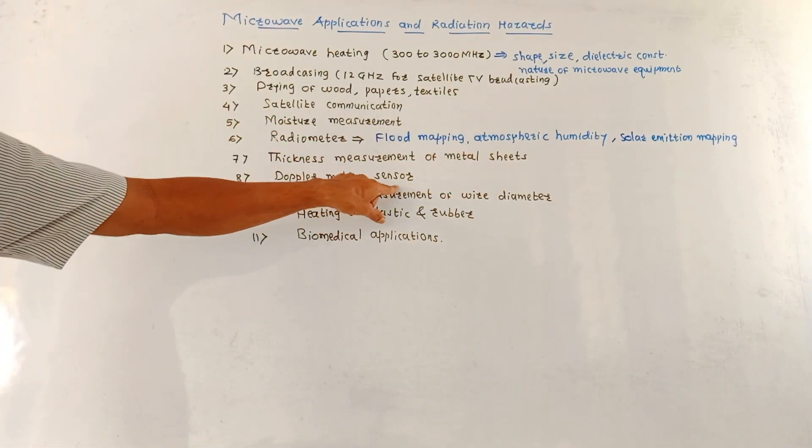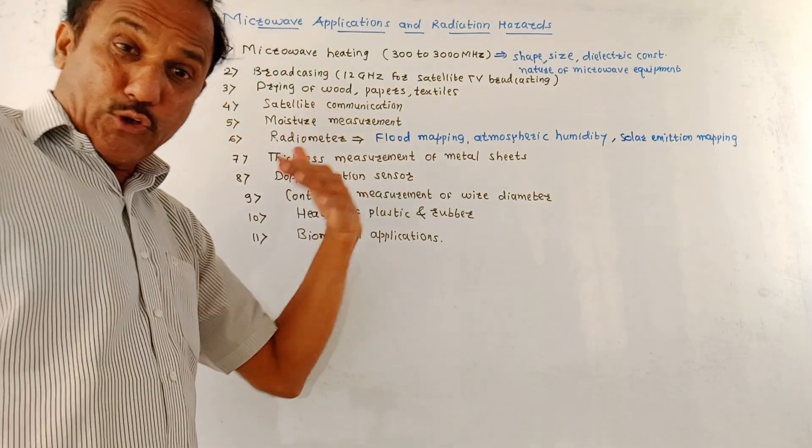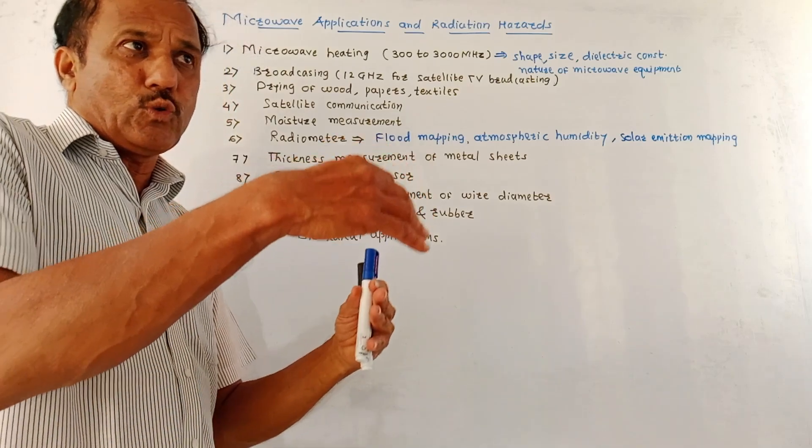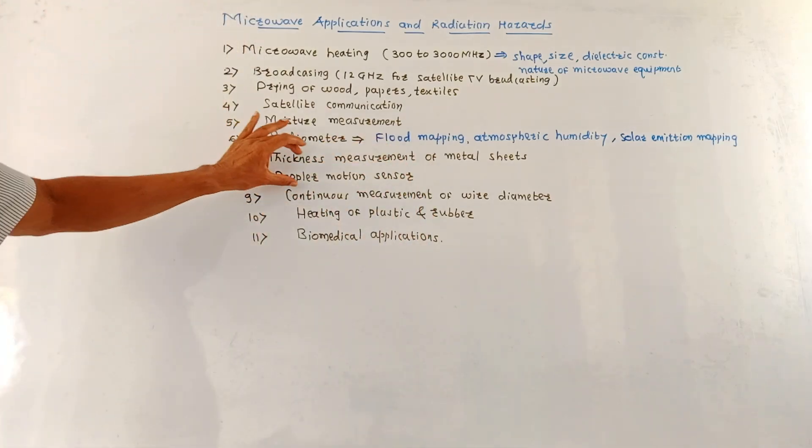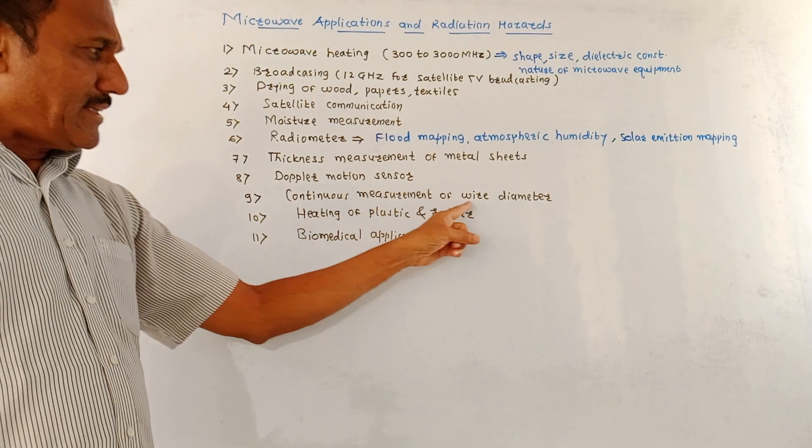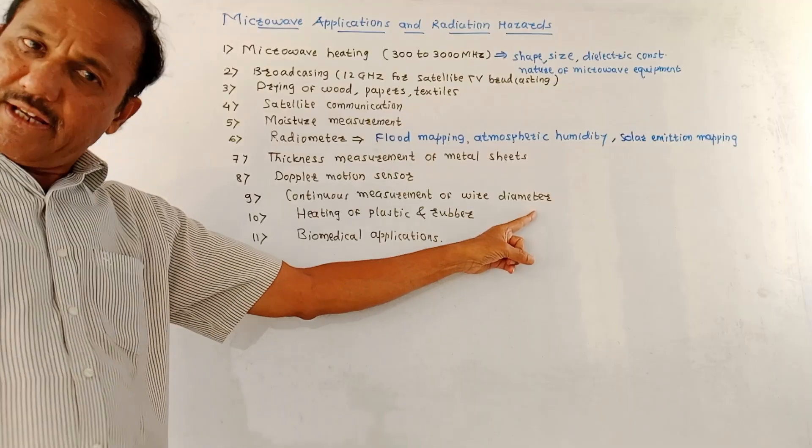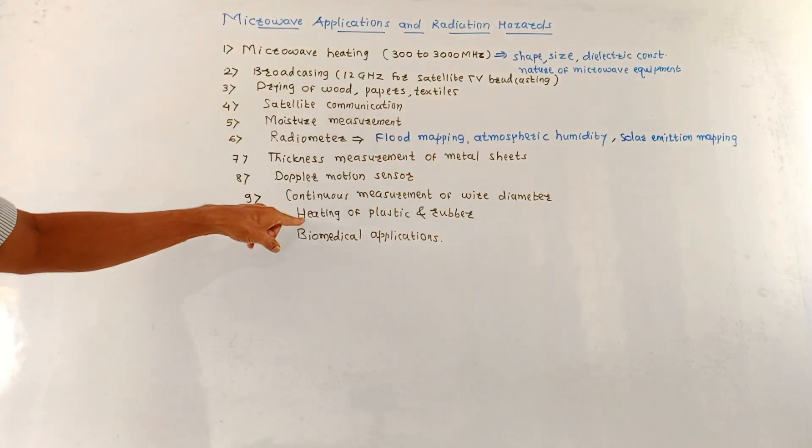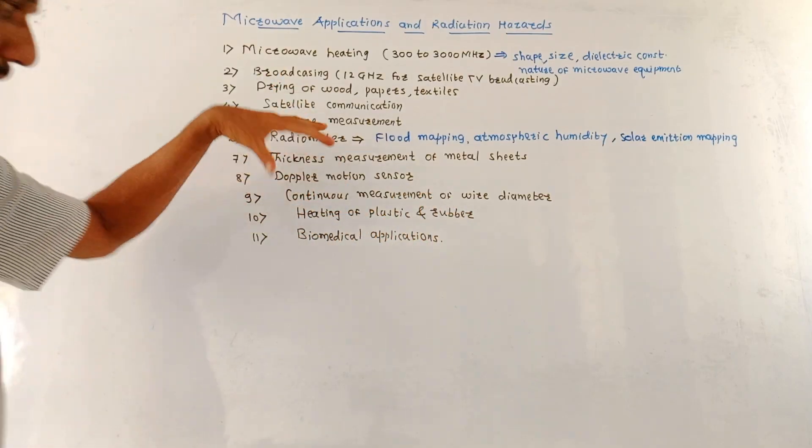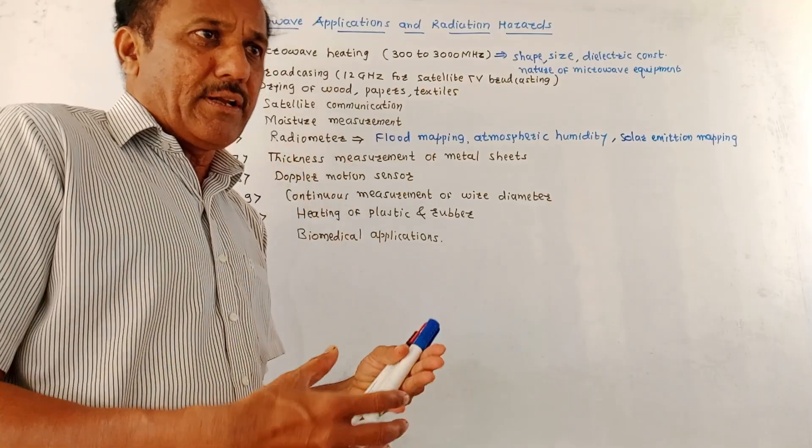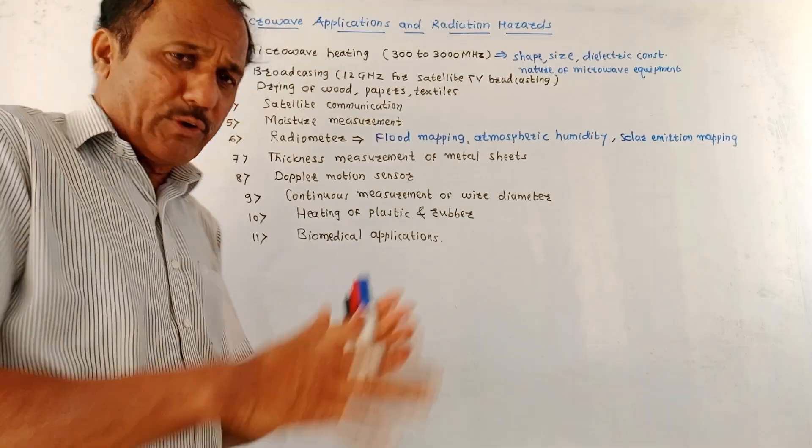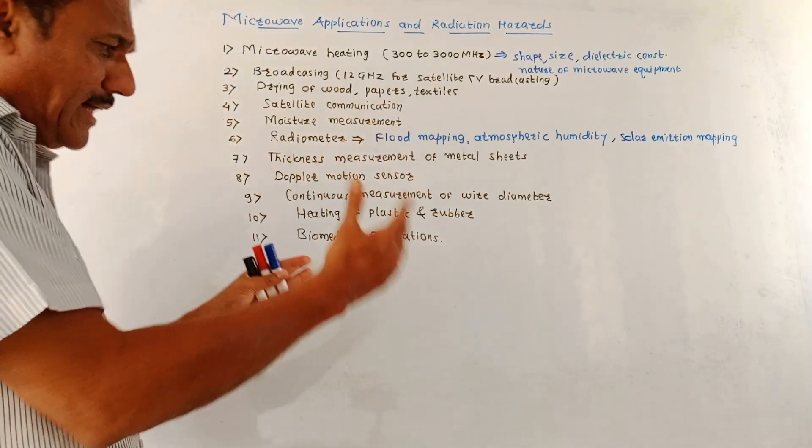Microwaves are used for measurement of thickness of metal sheets. In case of Doppler motion sensor, when there is a relative change in frequency, to get an idea of the target or measure the speed, Doppler motion sensors are used where microwave signals are employed. Continuous measurements of wire diameter can be done using microwave techniques. Also for heating of plastic and rubber materials and in some biomedical applications, for example Biomedical Diathermy, microwave signals are preferred.